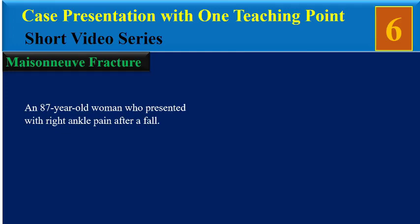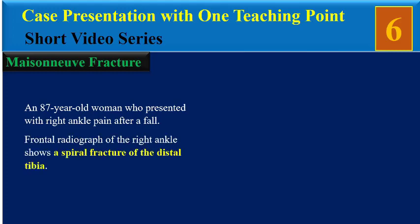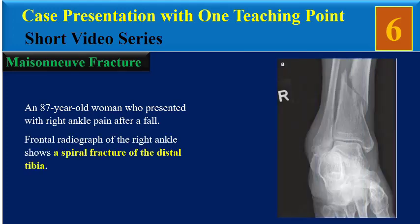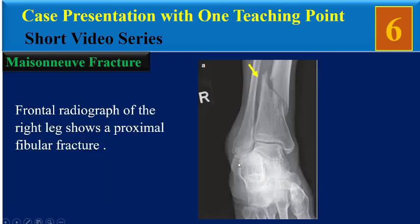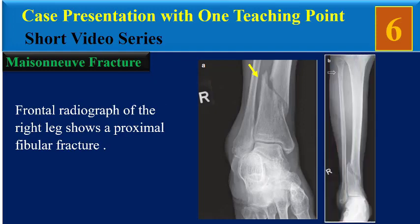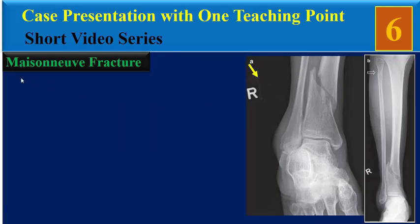She presented with right ankle pain after a fall. The frontal radiograph of the right ankle shows a spiral fracture of the distal tibia. The frontal radiograph of the right leg shows a proximal fibular fracture, also suggestive of Maisonneuve fracture.